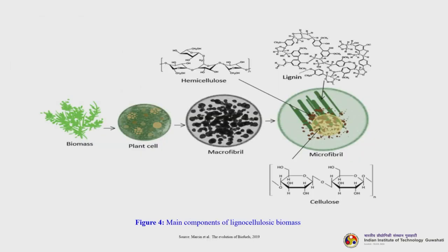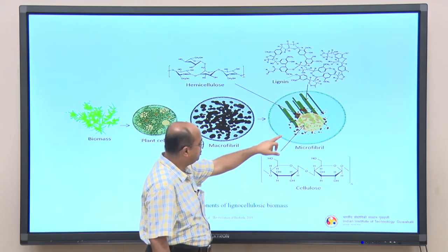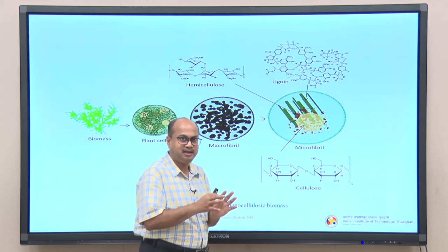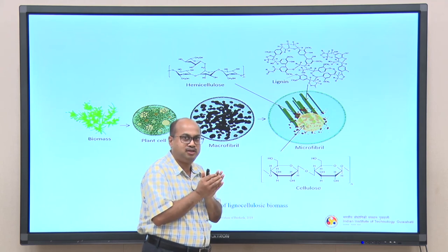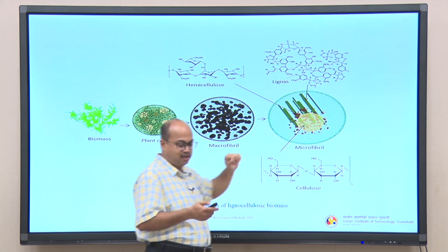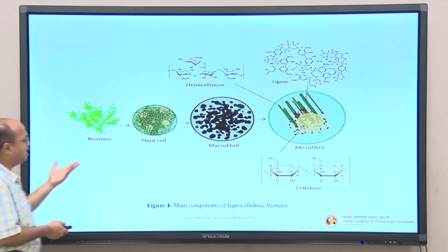This figure shows the main components of lignocellulosic biomass and how intricately they are bound together. In a typical plant cell microscopic image, we see the macrofibril and microfibril. In the microfibril, lignin (shown in green), cellulose, and hemicellulose (the brown portion) are intricately bound together. We need to disintegrate this entire structure to get cellulose and hemicellulose separately.